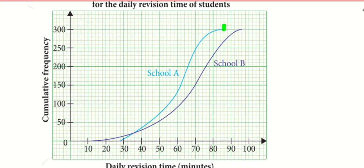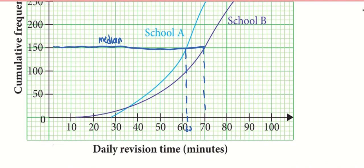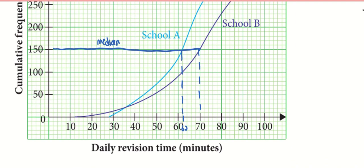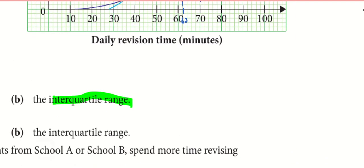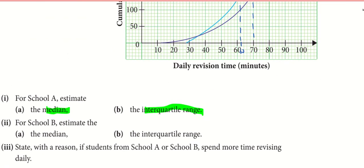Since there are 300 students, if I want to find the median, it will be half of 300. After that, take note, you need to read the revision time. For School A, as indicated in my graph, the median is 62, but for School B it's 70. Later, we will make meaning out of these numbers.